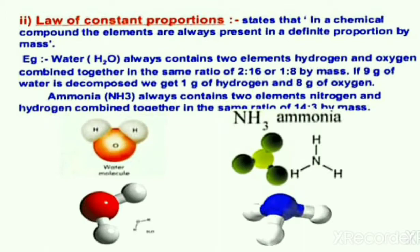For example, carbon dioxide is composed of two elements — carbon and oxygen — one carbon and two oxygen. Another example is water, which is composed of two elements: two hydrogen and one oxygen. Another example is carbon monoxide, which is composed of two elements: one carbon and one oxygen, that is CO.